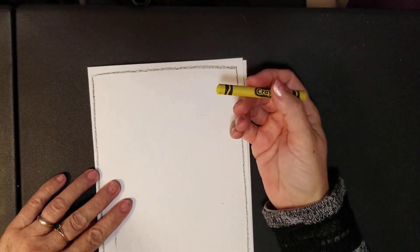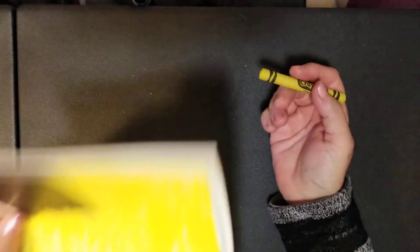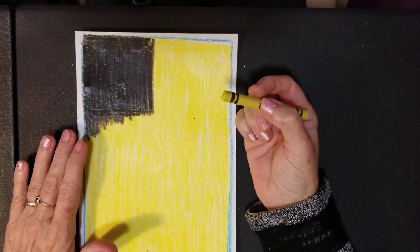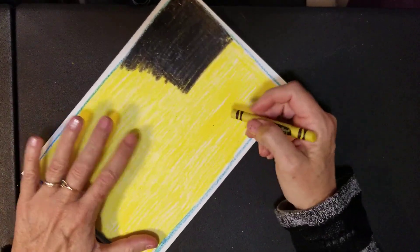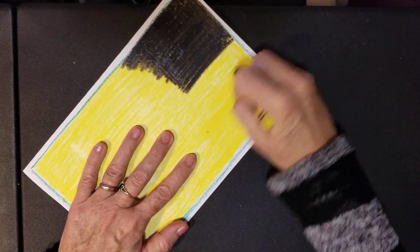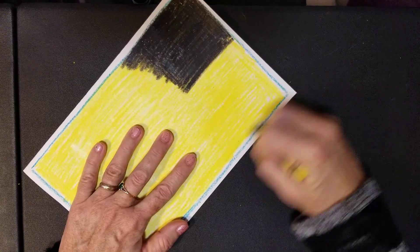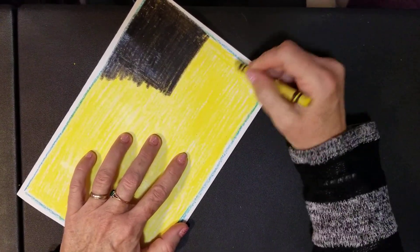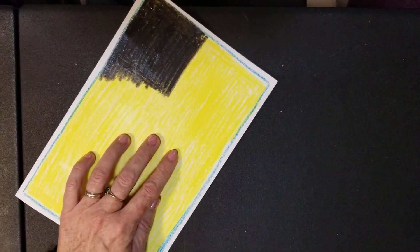I've gone ahead and made this side ready to go. What I've done with my yellow crayon is pressed really hard to get it nice and dark, waxy, and bright. You can see I didn't go further than that guideline because I don't want to be pressing hard and scribbling on my table.